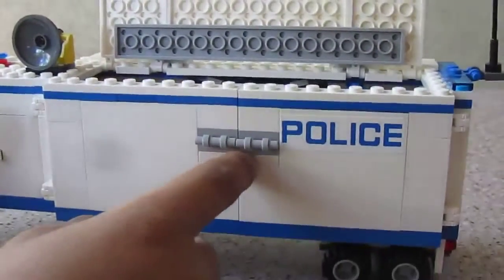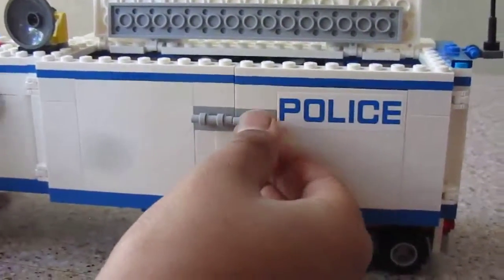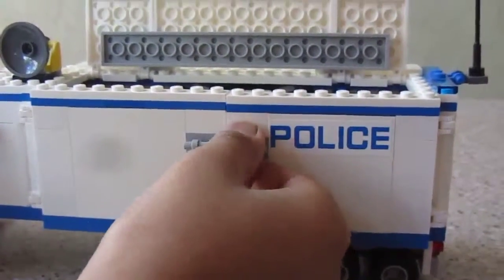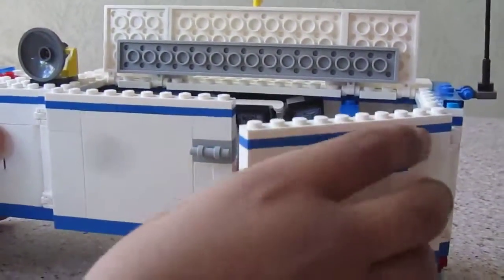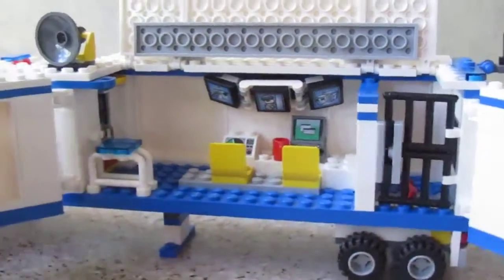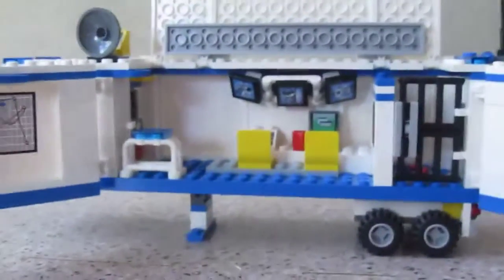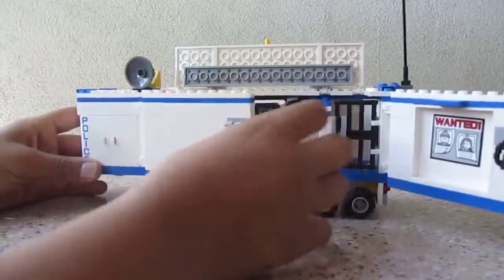That gray piece, that just bothered me. That's another handle. I would like it if they made that white or blue, but that opens up all around like that and it allows you to see the mobile station.